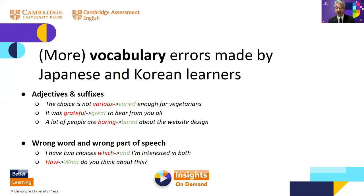Other mistakes found for Japanese and Korean learners include problems between adjectives and specific suffixes — for example, 'various' versus 'varied', 'grateful' versus 'great.' A very common problem across many languages, but especially for Japanese and Korean learners, is the confusion of -ing and -ed adjectives such as 'boring' and 'bored', 'fascinating' and 'fascinated', and 'interesting' and 'interested.' There are also wrong word choices and L1 interference — for example, 'how do you think about this' as a direct translation, when in English we would ask 'what do you think about this?'